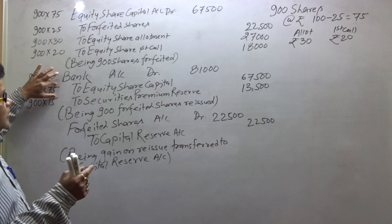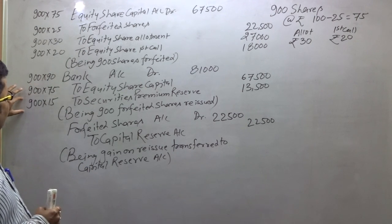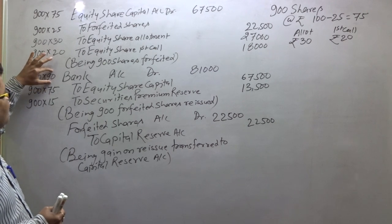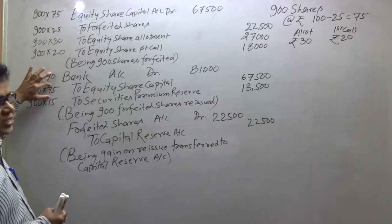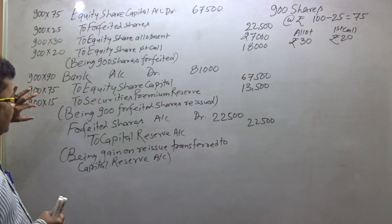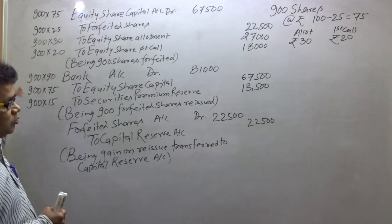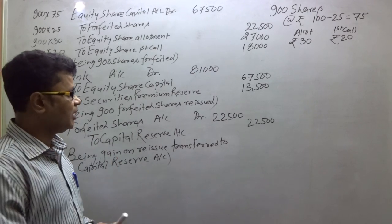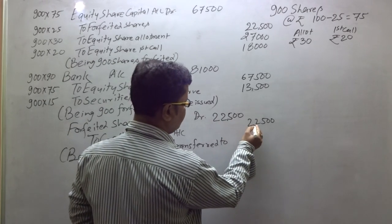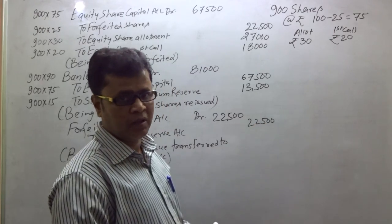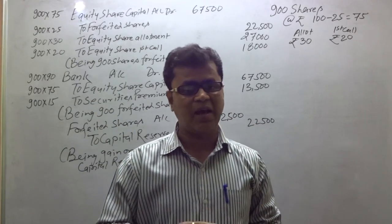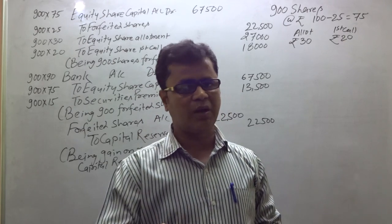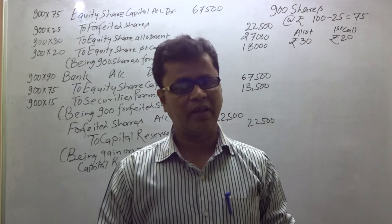So bank received 900×90, capital is 900×75, and the premium is the extra amount. Now the forfeit amount that the company received goes to Capital Reserve. The forfeited amount is transferred to Capital Reserve account. If you have more problems, you can send them in the comments. Thank you.